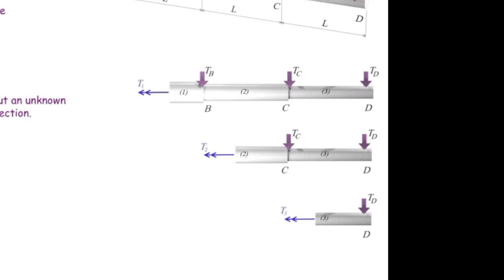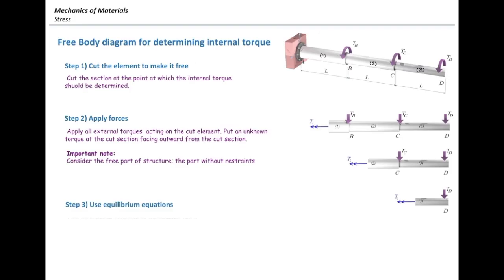The last part is simply using the equilibrium equations. The equilibrium equation for torsional elements is simply that the sum of the torques should be equal to zero, and with that we can determine the value of the torque.